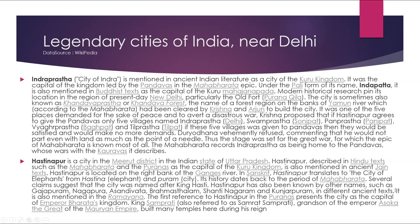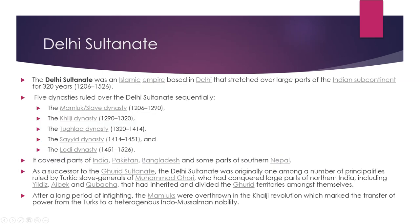Now let's talk about the Delhi Sultanate. The Delhi Sultanate was an Islamic empire based in Delhi that stretched over a large part of the Indian subcontinent for 320 years, from 1206 to 1526. Five dynasties ruled over the Delhi Sultanate sequentially: the Mamluk or Slave dynasty (1206–1290), the Khilji dynasty (1290–1320), the Tughlaq dynasty (1320–1414), the Sayyid dynasty (1414–1451), and the Lodi dynasty (1451–1526). It covered parts of India, Pakistan, Bangladesh, and some parts of southern Nepal.